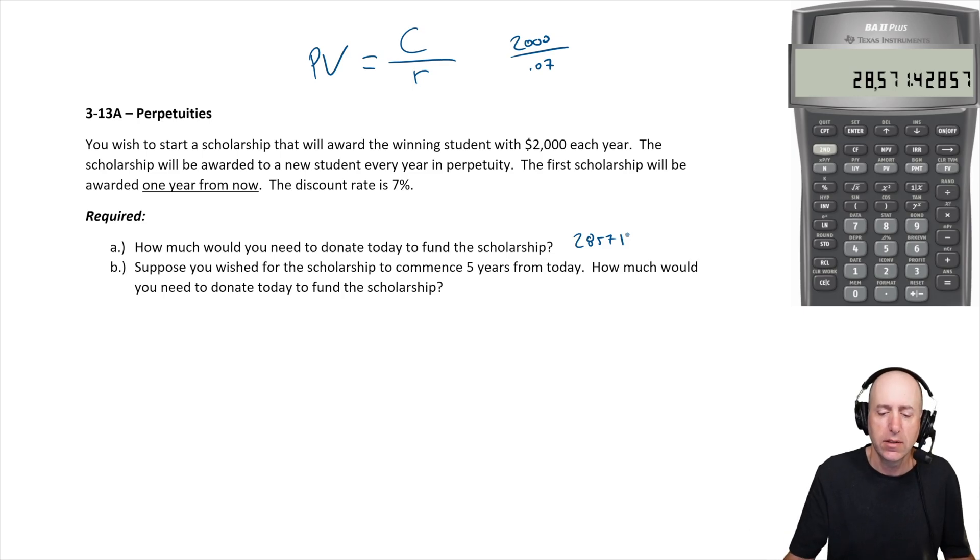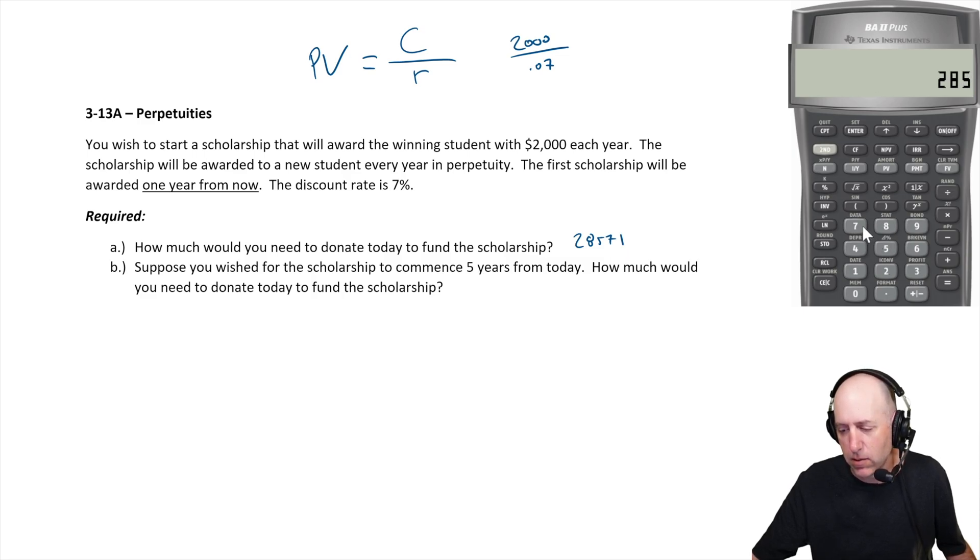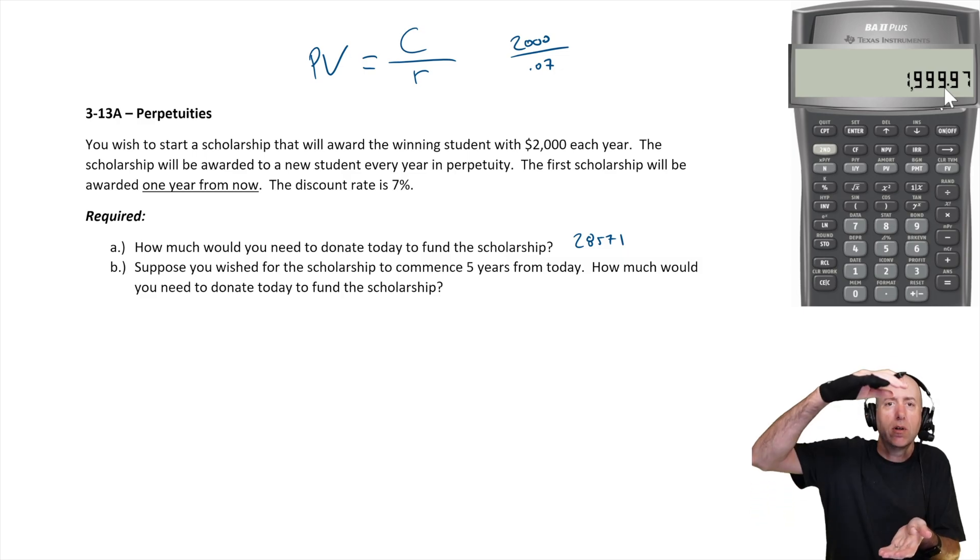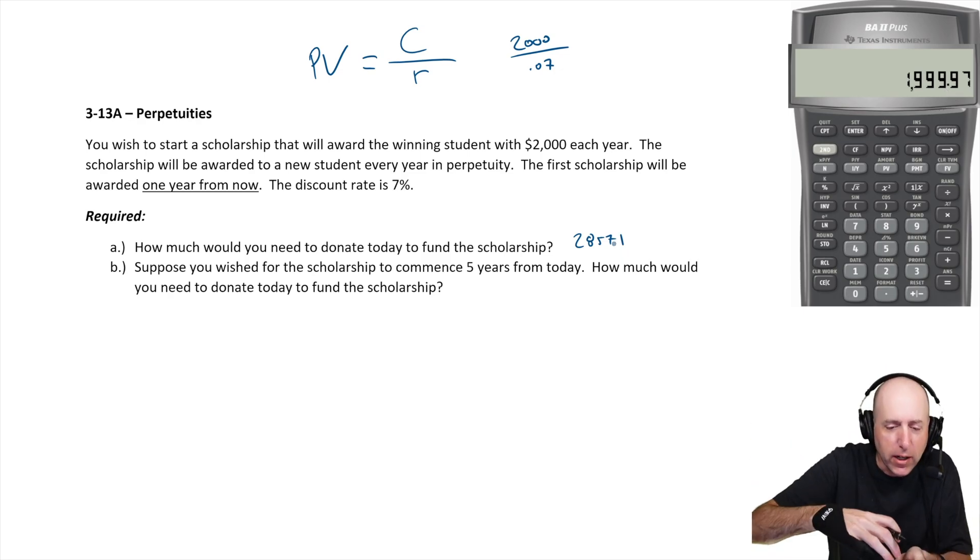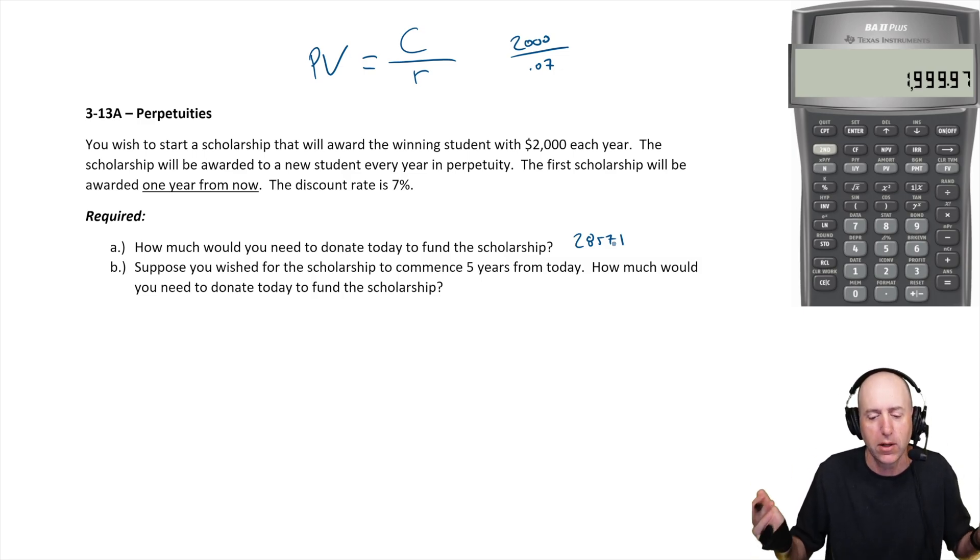The idea here is if you donate exactly 28,571 and it grows by seven percent, well let's do some math: 28,571 times 0.07, look at that, you get two thousand dollars. So you can just let the money grow by two thousand dollars, then skim the two thousand dollars off the top to pay this scholarship, and then you're back to 28,571. It's going to grow another two thousand dollars, and the idea is you can just do this in perpetuity. That's what makes a perpetuity a perpetuity.